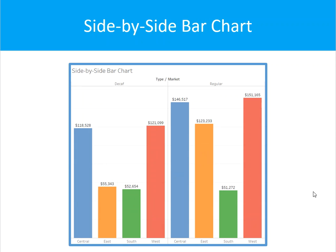Side by side bar chart — yet another bar chart. Similar to the horizontal bar chart, you can use this to show a side by side comparison of data. In this example, we're looking at regions and types of product — decal versus regular — and the use of color makes it easier to compare the sum of sales within each region for different product types. The side by side bar chart is similar to the stacked bar chart except we've unstacked the bars and put them side by side along the horizontal axis. Minimum requirements are one or more dimensions and one or more measures.